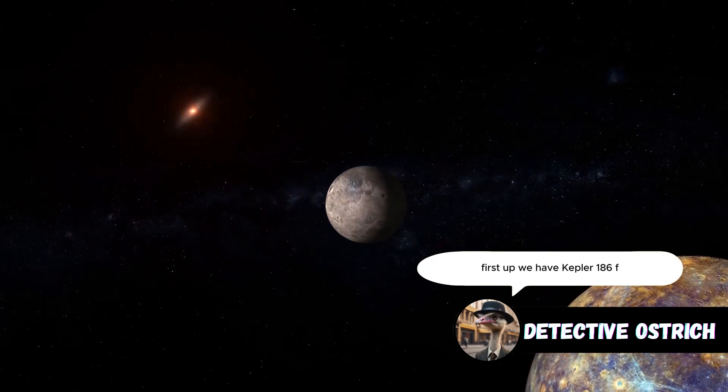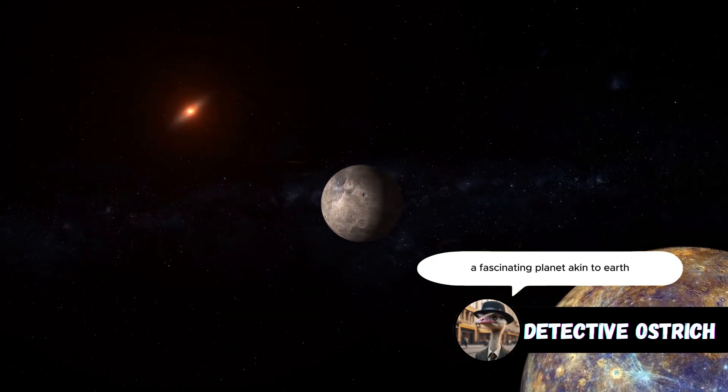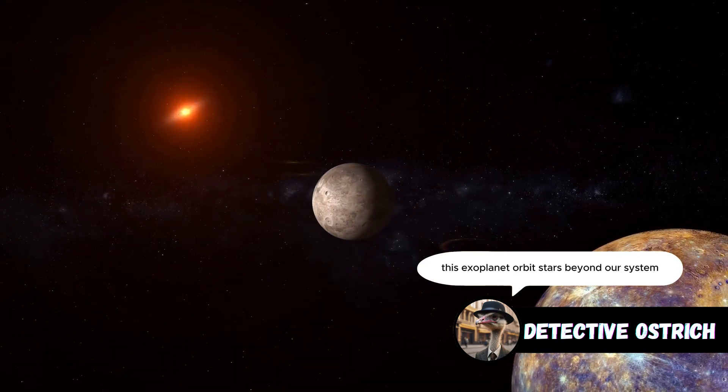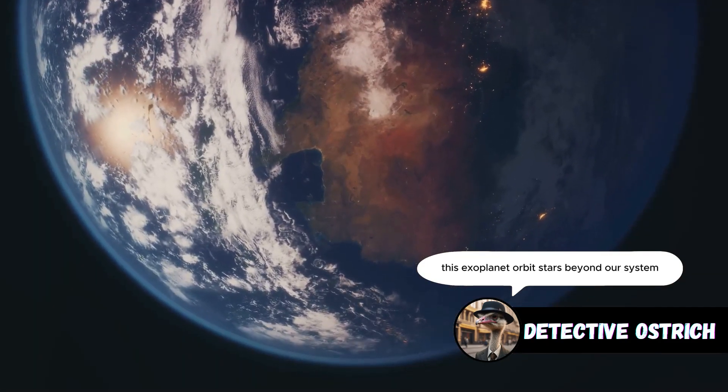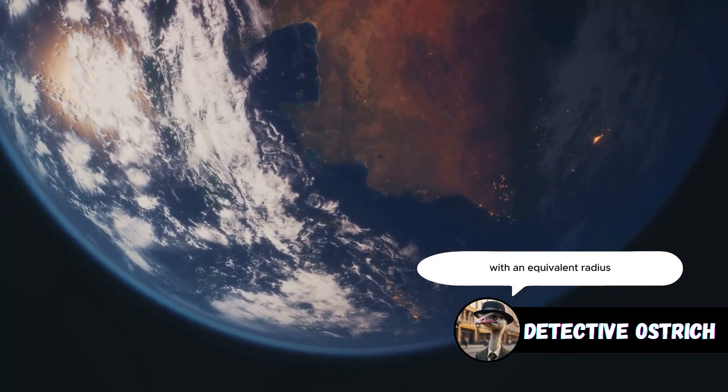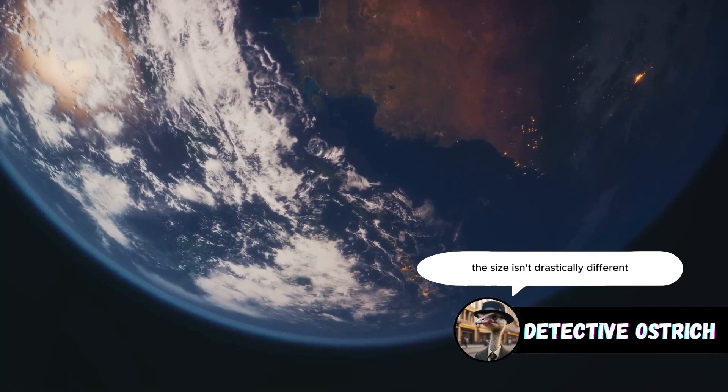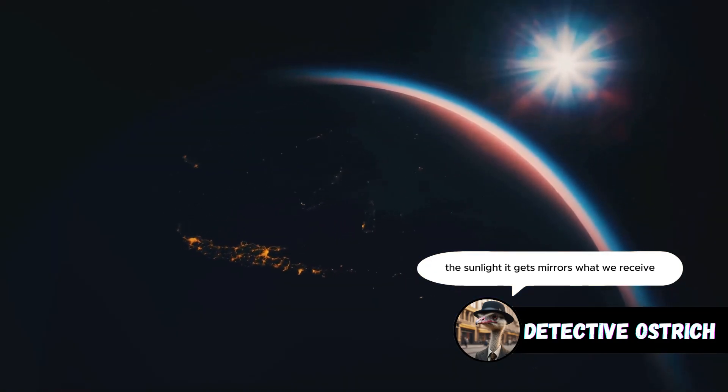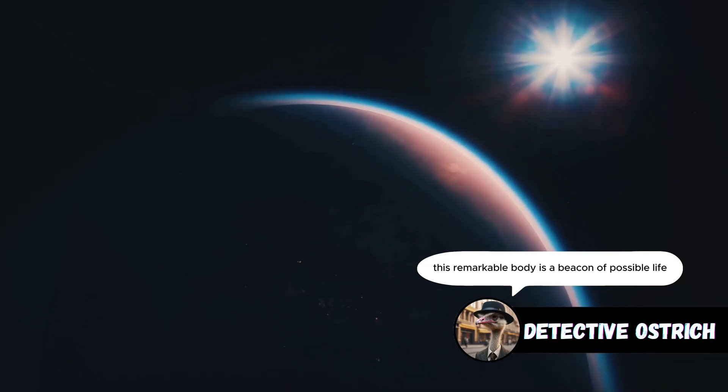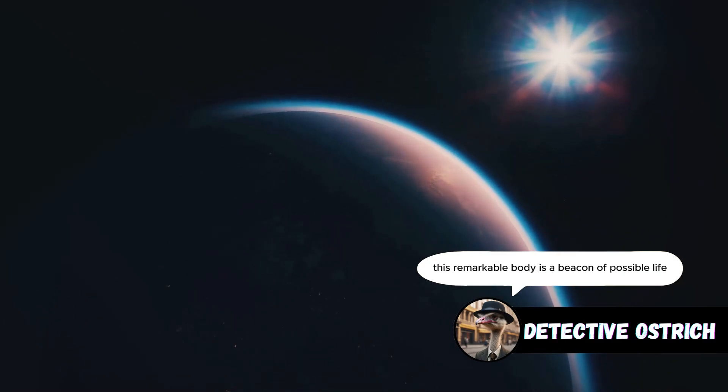First up, we have Kepler-186f, a fascinating planet akin to Earth. Nestled in the Cygnus constellation, this exoplanet orbits stars beyond our system. Its similarities with Earth have turned heads worldwide. With an equivalent radius, the size isn't drastically different. The sunlight it gets mirrors what we receive, illuminating a similar warm glow on its surface. This remarkable body is a beacon of possible life.